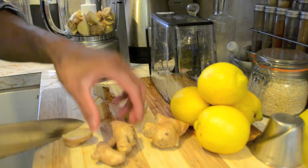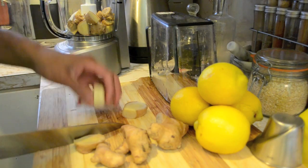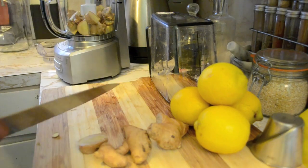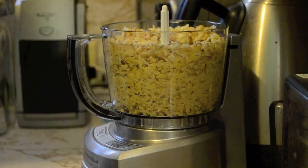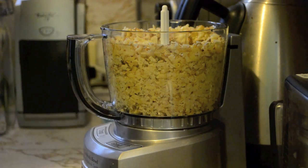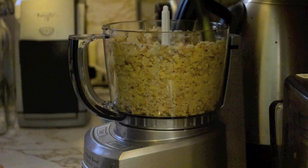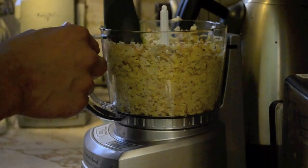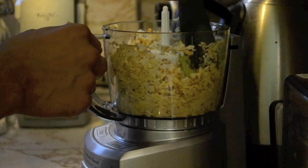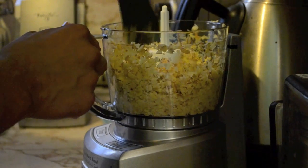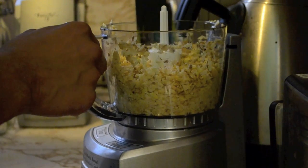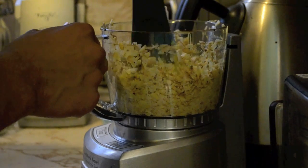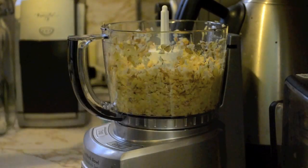Don't even worry about the skins because when we start juicing it, it's not even gonna matter. You want to make sure to make all those big pieces go to the bottom. Small enough so that when you squeeze it through that juicer, all that wonderful golden juice will come out.